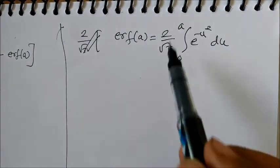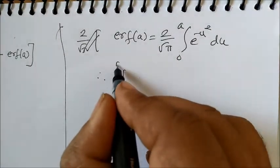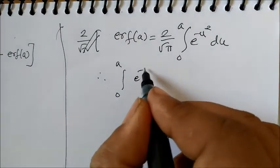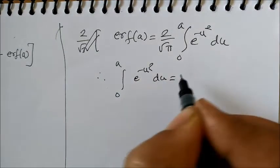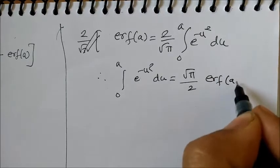Now this integration I have, so what I can write for this integration is: therefore integral 0 to a, e to the power minus u square du is equal to root pi by 2 error function of a.